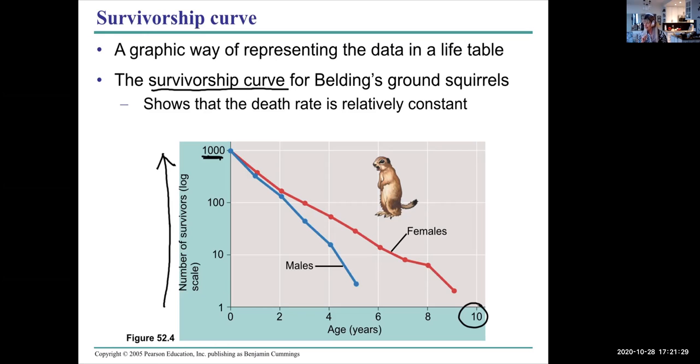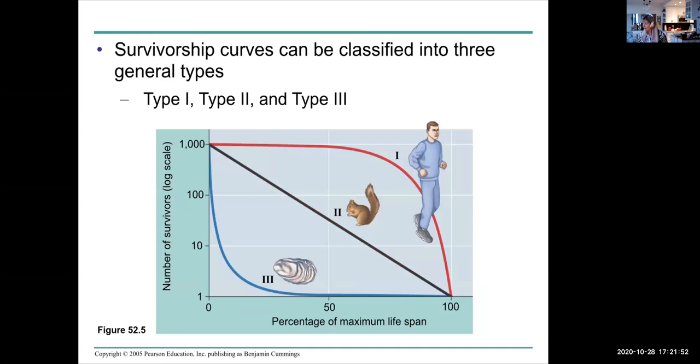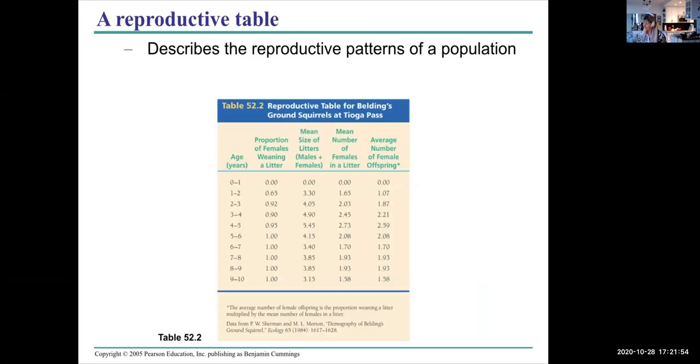Another thing that's interesting is the death rate is relatively constant with this particular species. In other words, death by whatever the reasons are—usually predators or lack of food—is constant throughout each age group. But that's not true of all species.